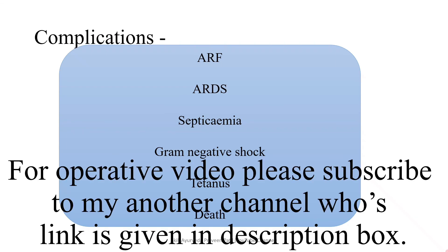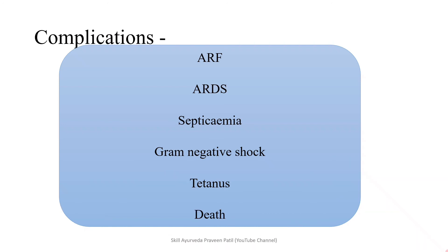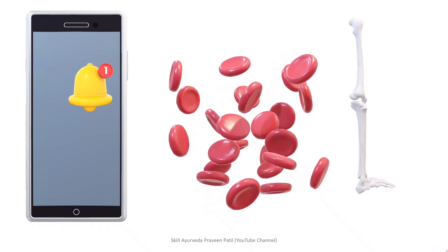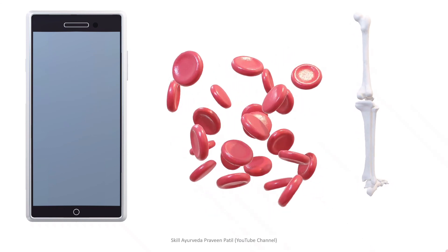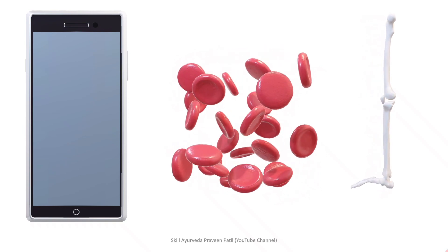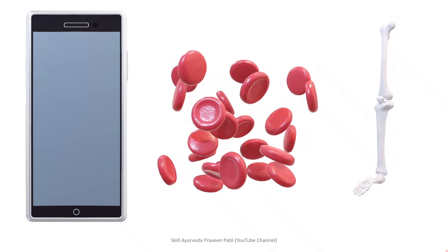Complications include: acute renal failure, acute respiratory distress syndrome, septicemia, gram-negative shock with hypotension or hypoxia, tetanus, and death. This concludes the brief introduction about Fournier's gangrene. If you like such videos, kindly subscribe to the channel and press the bell icon. Thank you all for watching.